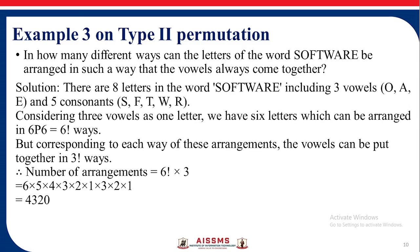Next example: In how many different ways can the letters of the word SOFTWARE be arranged such that the vowels always come together? There are 8 letters in SOFTWARE, including 3 vowels O, A, E and 5 consonants S, F, T, W, R. Considering the 3 vowels as one letter, we have 6 letters arrangeable in 6 factorial ways. The vowels among themselves can be arranged in 3 factorial ways. So the total arrangements are 6 factorial into 3 factorial = 4320.